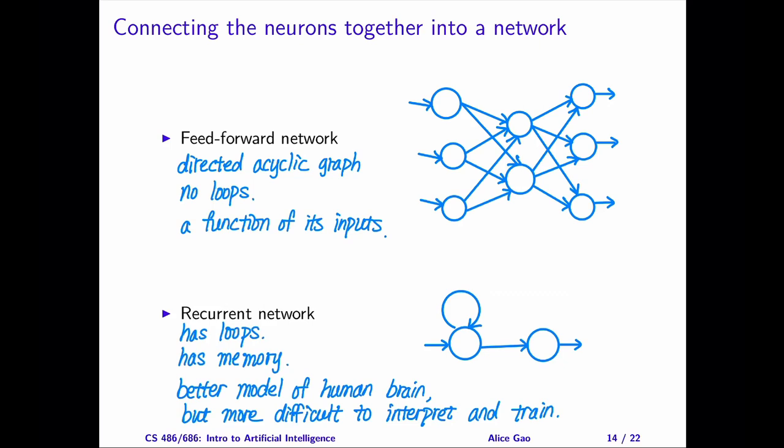In this course, we will focus on feedforward networks. If you are interested in learning more about other types of neural networks, I'd recommend taking CS480 on Introduction to Machine Learning and CS479 on neural networks.